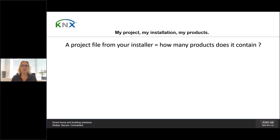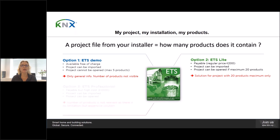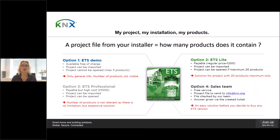If ETS Inside is not a possible choice due to products with plugins, you can still choose between the ETS Lite and the ETS 5 Pro version. Remember the key question: how many products are you planning to install or are already installed? The ETS 5 Lite is limited to 20 products per project and the ETS 5 Professional is unlimited. So if you have a project with 150 products, you definitely have to go for the ETS 5 Professional license. You might think: I have a project but I don't know how many products are in this project file — maybe I could use the demo version to open it and check.